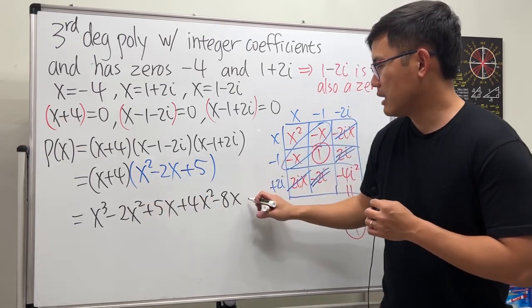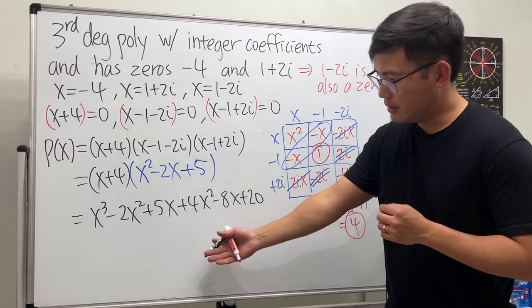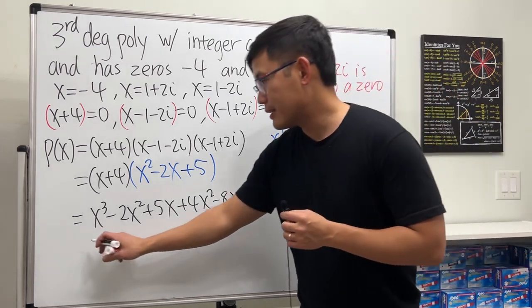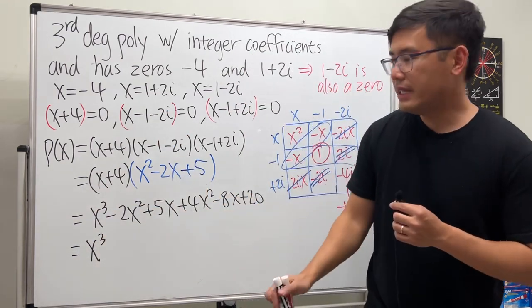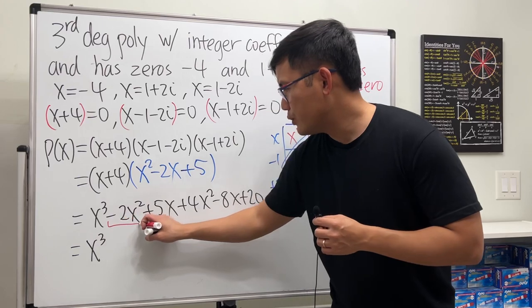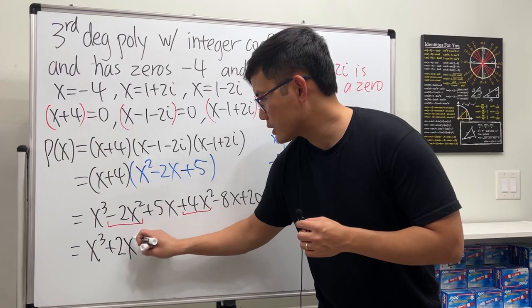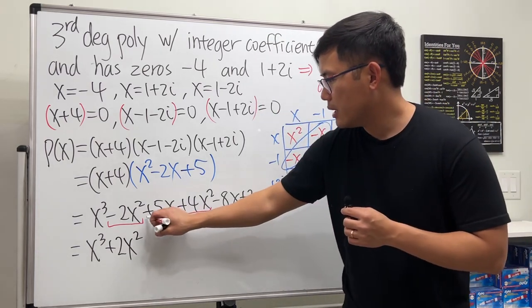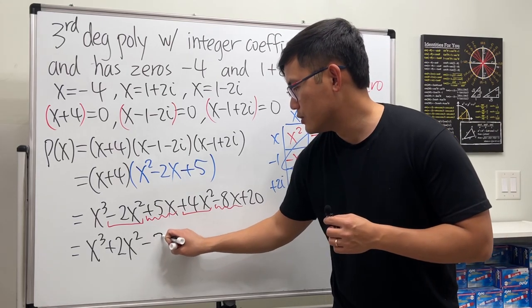Continue: 4 times that is +4x², 4 times -2x is -8x, lastly +20. I promise this is the last step. Combine terms: x³, then -2x² + 4x² gives +2x², then 5x - 8x is -3x.